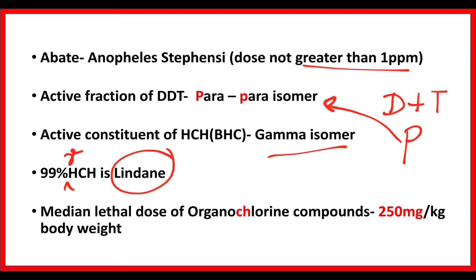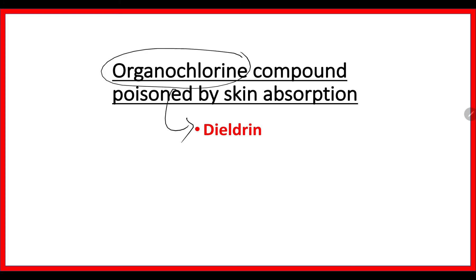The median lethal dose for human beings of this organochloride compound is 250 mg per kg body weight. To remember this, 250 in Tamil is 'Kalki', which sounds similar to 'C-H' — use that association. Being an organochloride compound, Dieldrin is the one which is poisonous even by skin absorption — this is important to note.